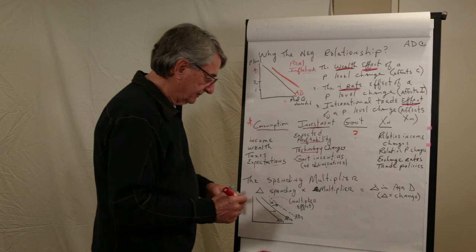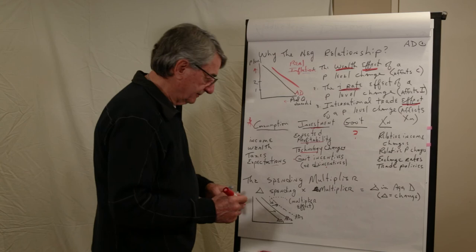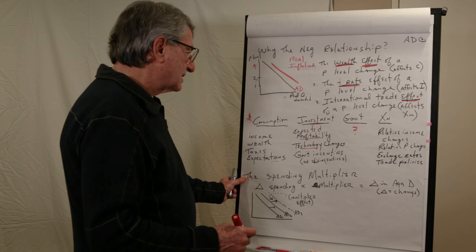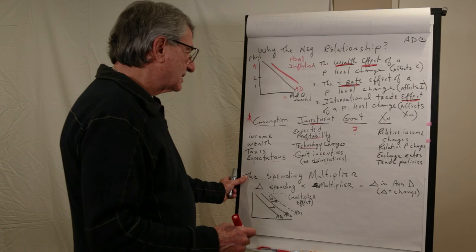Anyway, the big one is consumption. Consumption is 70% of spending, 65-70%. And finally, the multiplier, the spending multiplier. The spending multiplier says...